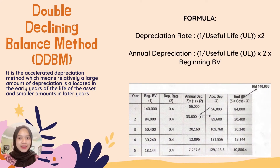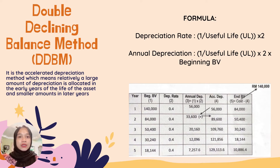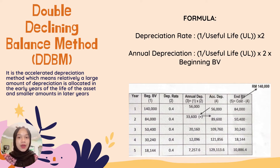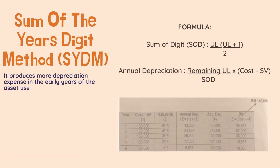For the double declining balance method, there are two formulas: depreciation rate and annual depreciation. The depreciation rate formula is one divided by useful life, and then multiply by two. The annual depreciation formula is one divided by useful life, multiplied by two, and then multiplied by the beginning value. Using the same example as the straight line method, construct the depreciation schedule for the double declining balance method.